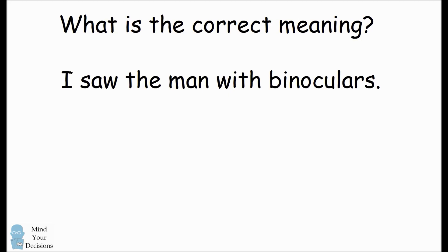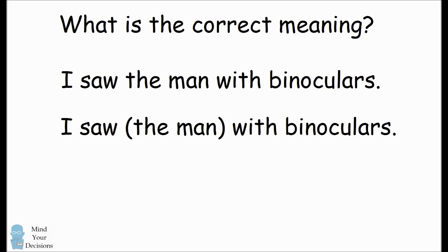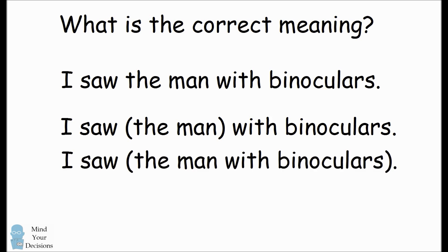One person could look at the sentence and say this sentence means I saw the man with binoculars. That is I was using binoculars to see the man. Another person could say no the sentence means I saw the man with binoculars. You were actually looking at someone who had binoculars.